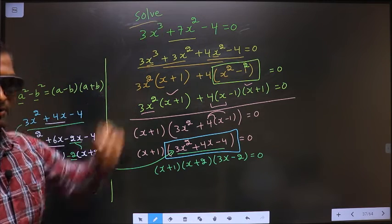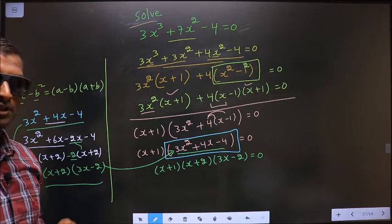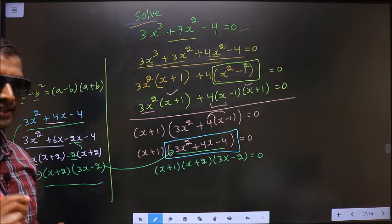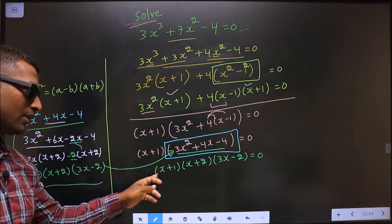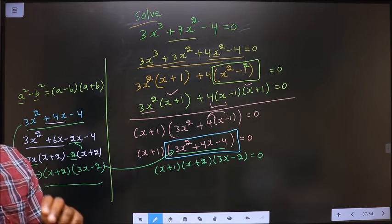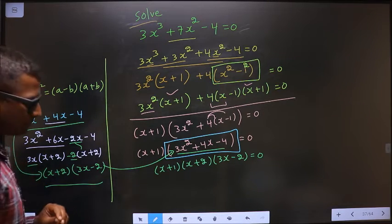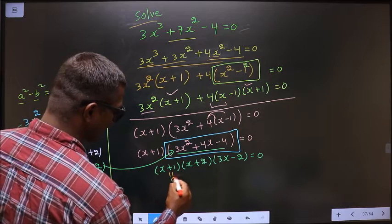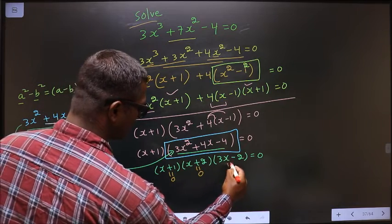They told you to solve. That means you need to find the values for x. Here, product of brackets equal to 0. So to get the values for x, you equate each bracket to 0. That is, this equal to 0, this equal to 0, this equal to 0.